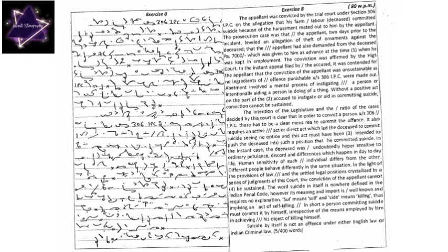The intention of the legislature and the ratio of the cases decided by this court is clear that in order to convict a person under section 306 IPC, there has to be a clear mens rea to commit the offense. It also requires an active act or direct act which led the deceased to commit suicide seeing no option, and this act must have been intended to push the deceased into such a position that he committed suicide.